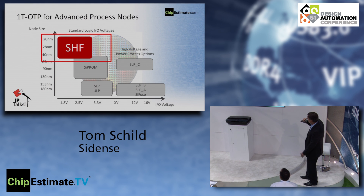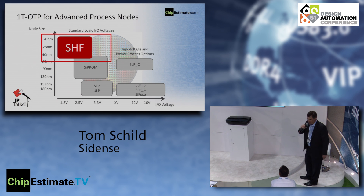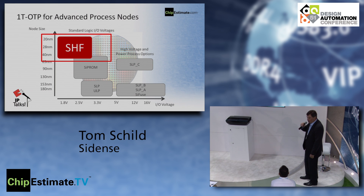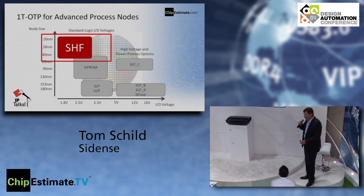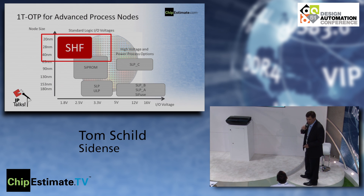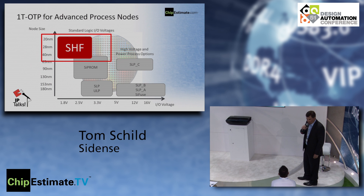The architecture I'll discuss further is called SHF. All the architectures described use the same one-transistor bit cell, but the surrounding control logic and programming controller change based on the process — thinner gate oxides in advanced nodes require a different charge pump, for example. SHF is the architecture for advanced nodes, covering 40 nanometers down through 20 nanometers, and is the same architecture used for FinFET as well.